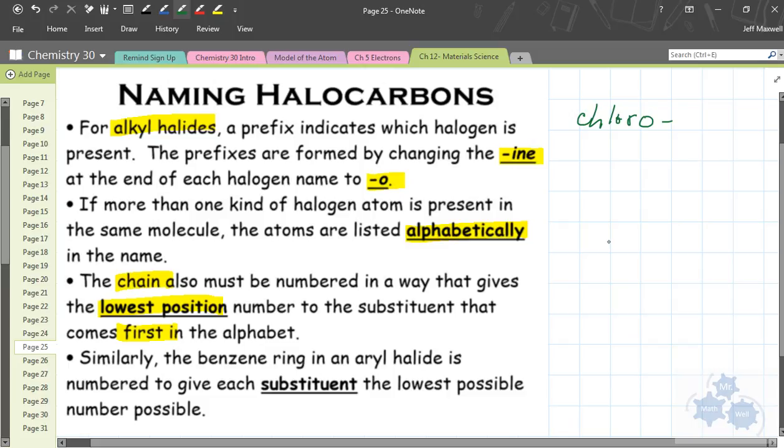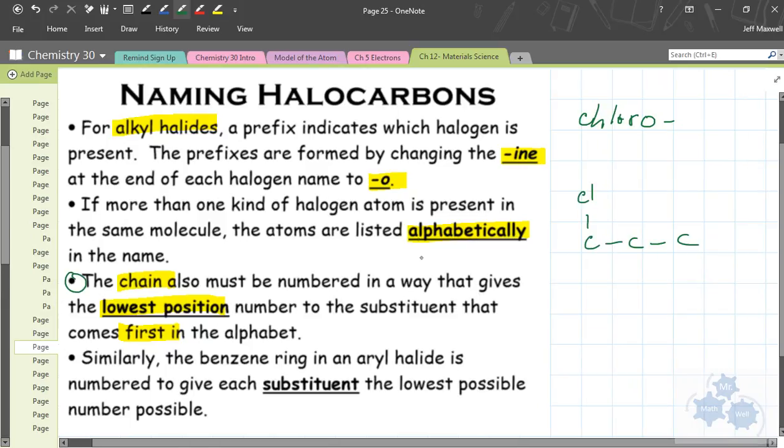If you have, let's say, three carbons here, and I've got fluorine on the first carbon, what this point right here is saying is that you can't say that this is three chloro. You have to say one. And if there is something like this, there's a chlorine here and a fluorine on this one, then you would have to say the chlorine is written first, so this would have to be carbon number one. So it would be one chloro, two fluoropropane.